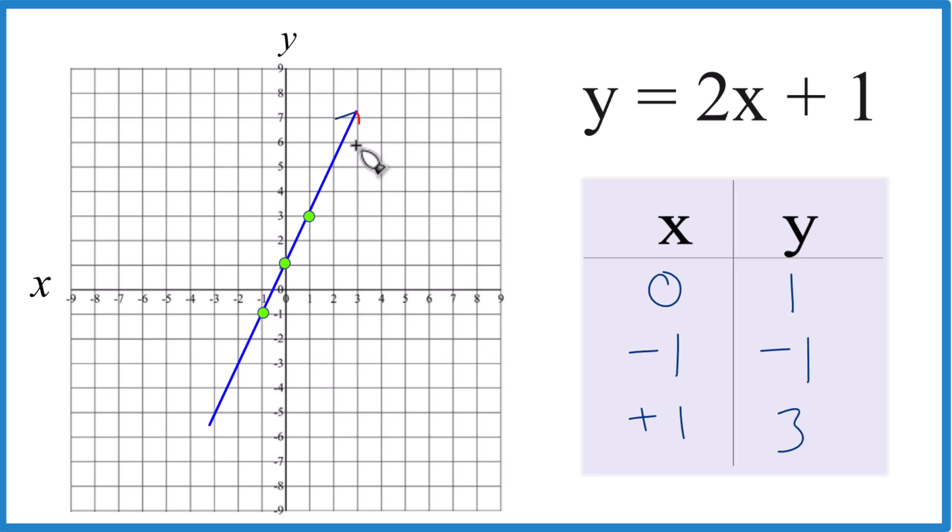Then put arrows, show that it goes to infinity, and that is the graph for y equals 2x plus 1, using a table of values. You could put other values in, all the points, they would be on our line here.